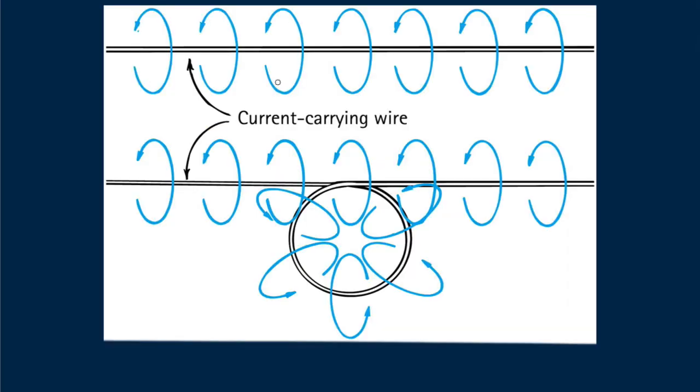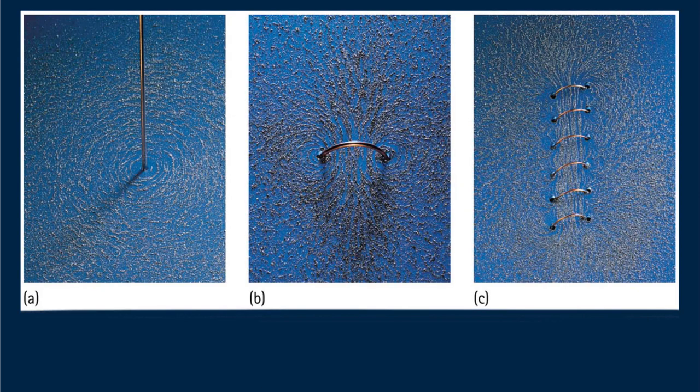If the wire is bent into a loop, the magnetic field lines become bunched up inside the loop. If the wire is bent into several loops overlapping one another, the concentration of magnetic field lines inside the loops is increased. A current carrying coil of multiple loops makes up an electromagnet.